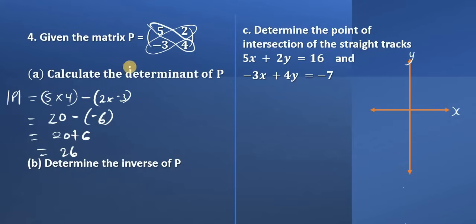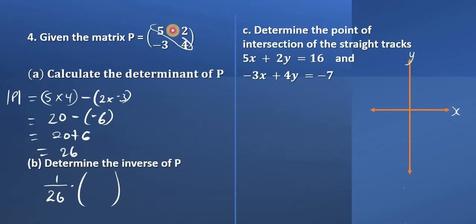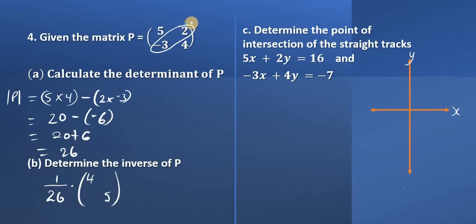Now to find the inverse of the matrix P, we know that we have 1 divided by the determinant — we found the determinant to be 26 — so it's 1 divided by the determinant times the adjoint matrix. The adjoint matrix is found by switching the elements of the leading diagonal, so 4 goes here and 5 goes here — make that switch. And then we take these 2 elements and multiply them by negative 1.